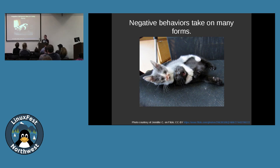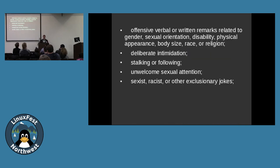Negative behaviors take on many forms — there are lots of ways we behave that aren't great. In my experience, most of the ways they actually play out are pretty innocuous or look pretty small. Here are some examples of specific behaviors from the DebConf code of conduct. Negative behaviors include offensive verbal or written remarks related to gender, sexual orientation, disability, physical appearance, body size, race, or religion; deliberate intimidation; stalking or following; unwelcome sexual attention; sexist, racist, or other exclusionary jokes.